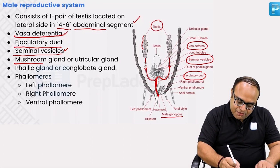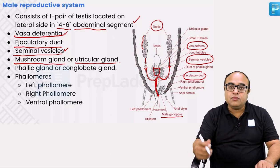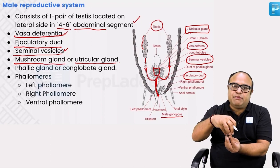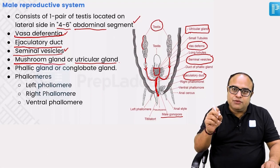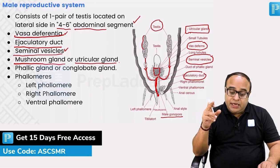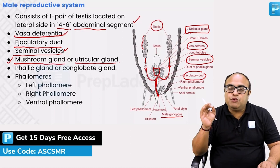Then we have a mushroom gland or the utricular gland. In the diagram, the mushroom gland or utricular gland is situated just above the seminal vesicle. Both the vas deferens meet at a point where the seminal vesicle is present, and just above the seminal vesicle is the utricular gland. This utricular gland is also called mushroom gland because of its mushroom-like shape.